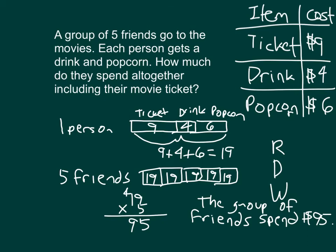So it's really a two-step problem where we first figured out the total cost per person, and then, since we had five friends, that's why we multiplied by 5. Our answer does seem reasonable — if we spent $95 there, it's very close to $20 per person. 20 times 5 is 100.